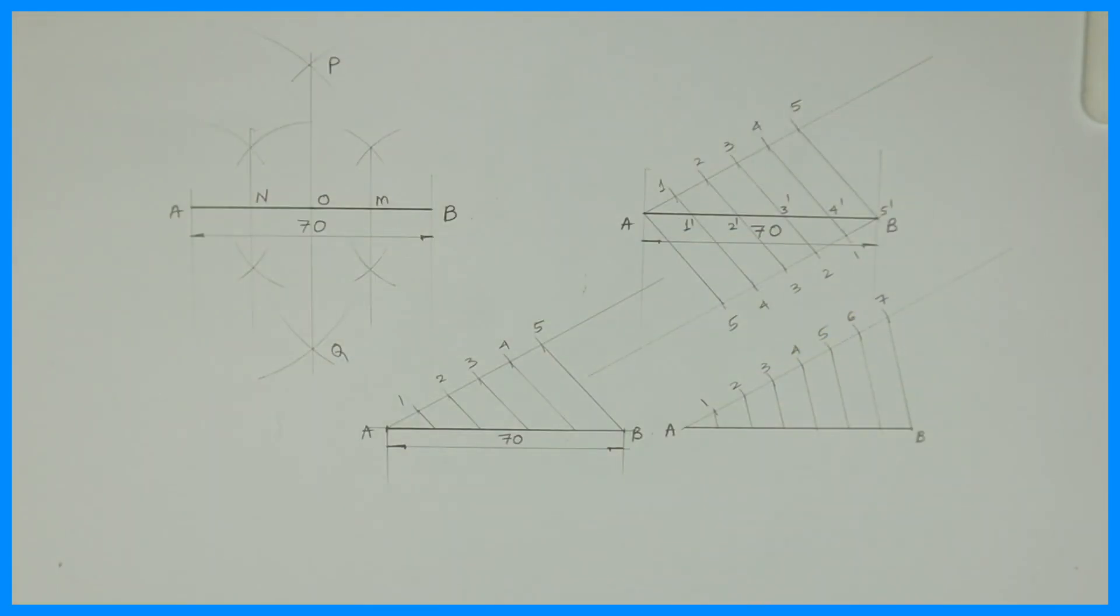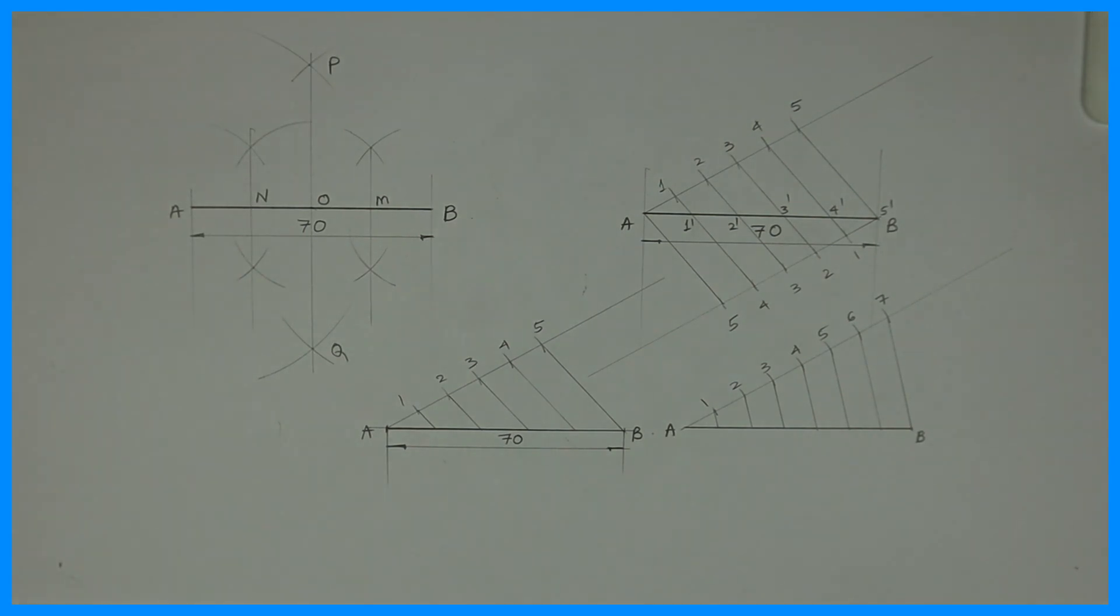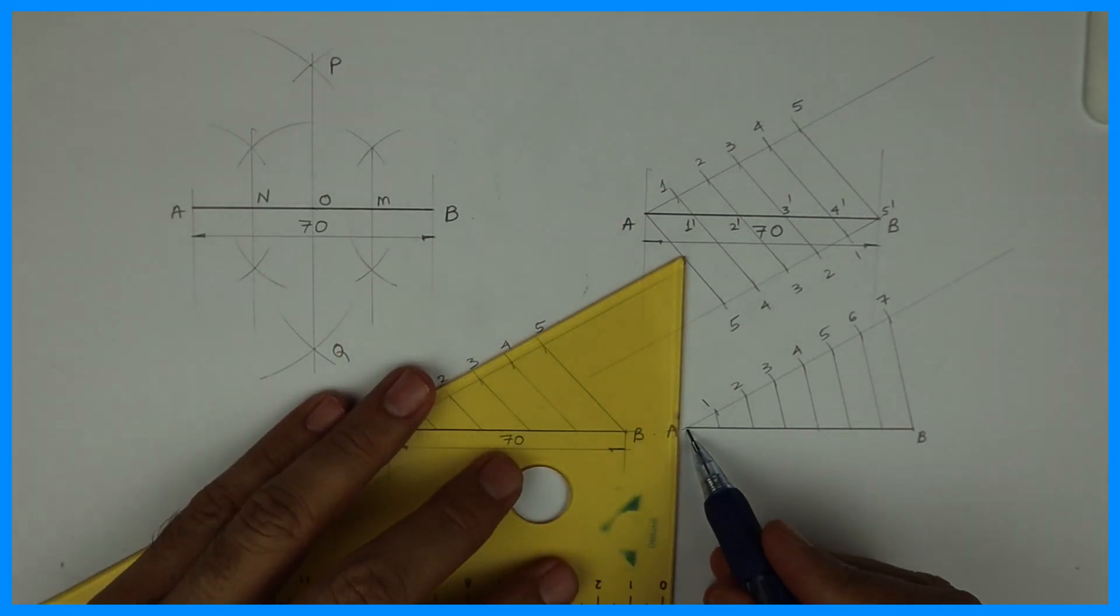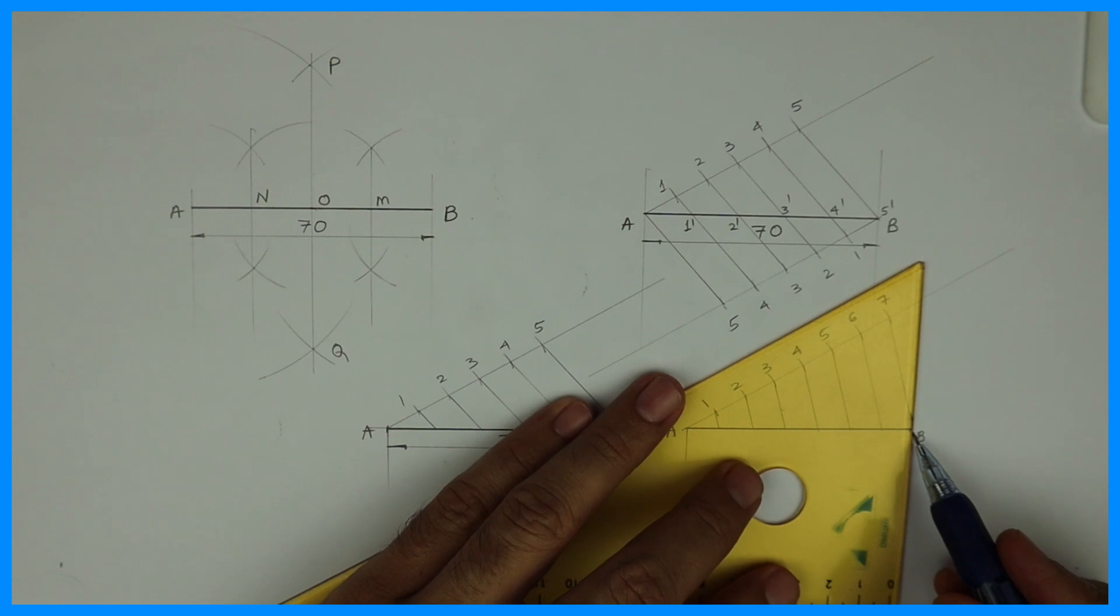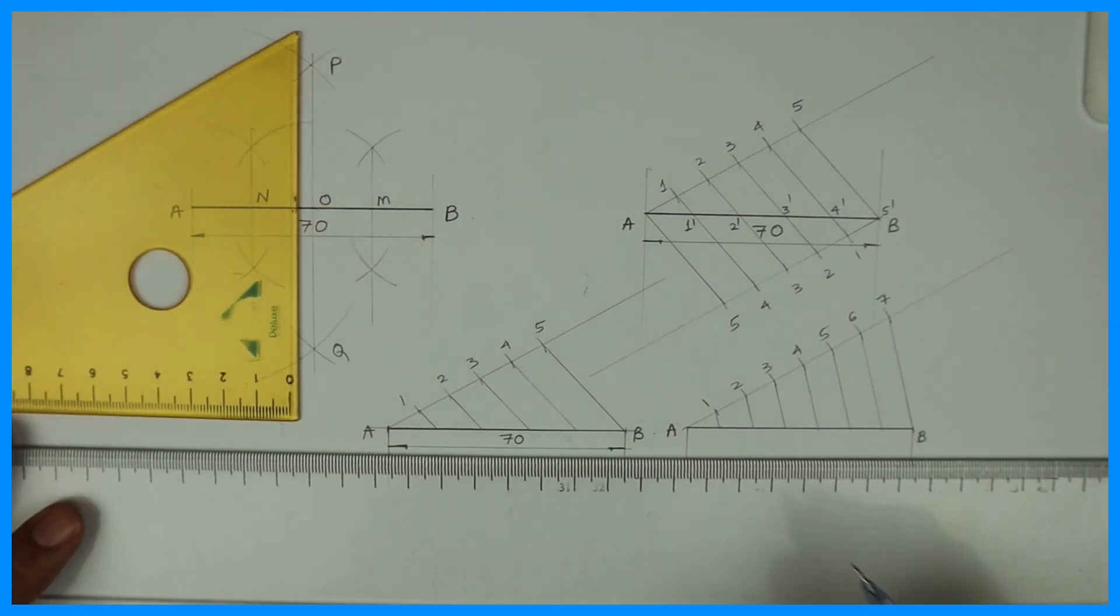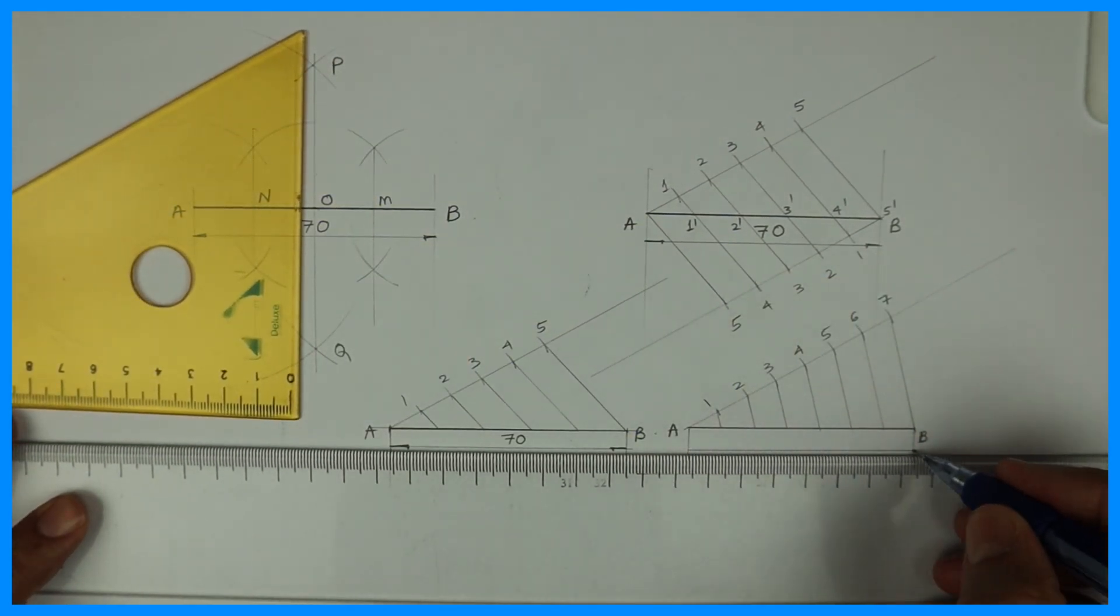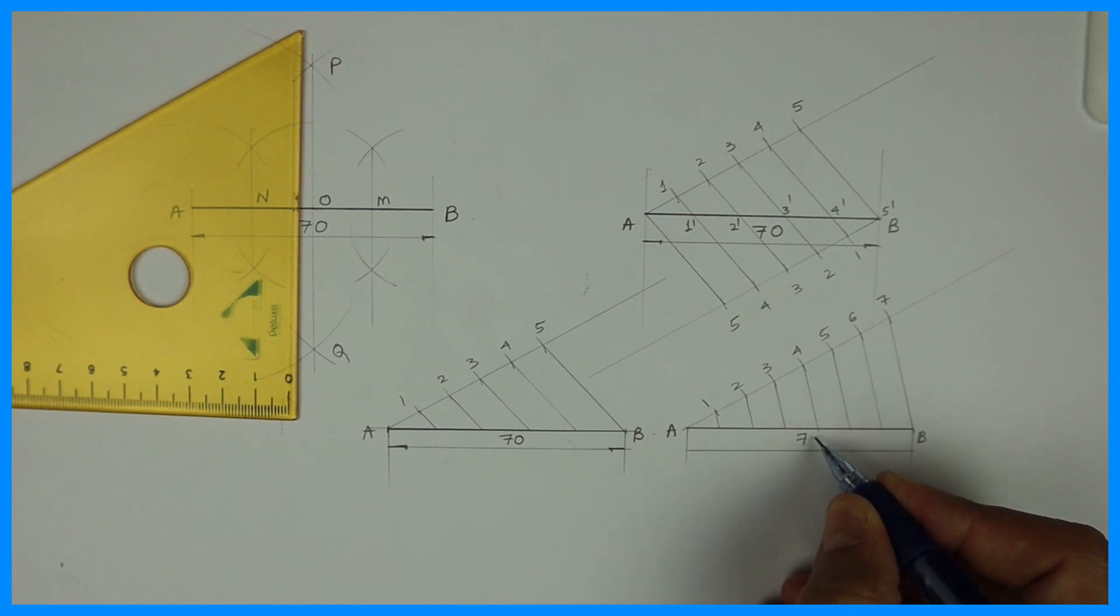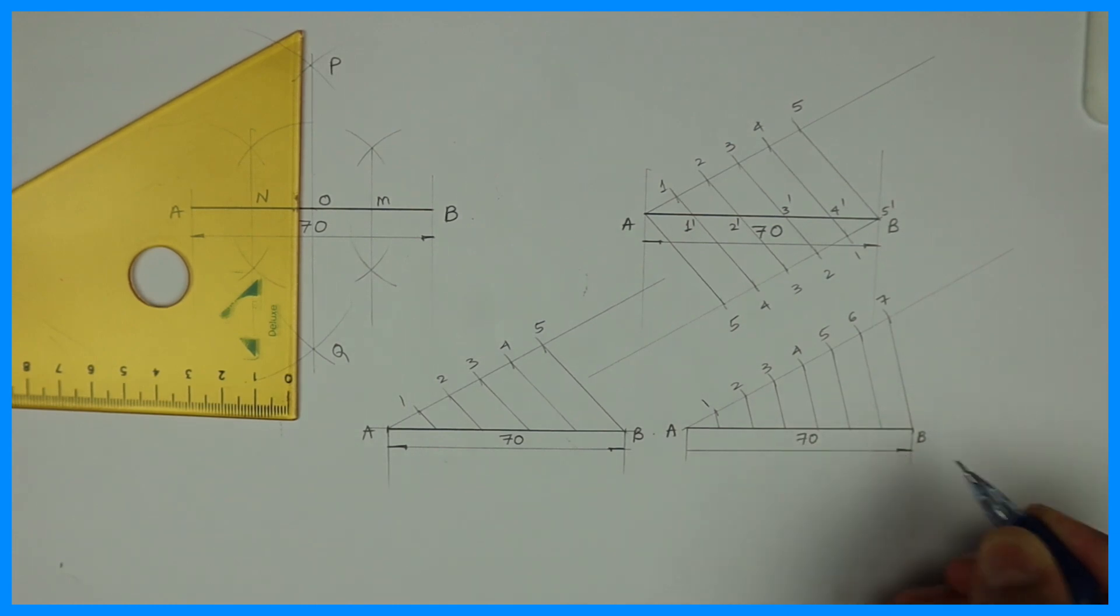So we got line AB divided into how many parts? 7 parts. Remember that, if you want to do 9 parts then you take 9 times, you know those arcs, and join 9 to B and again do the same method. Thank you.